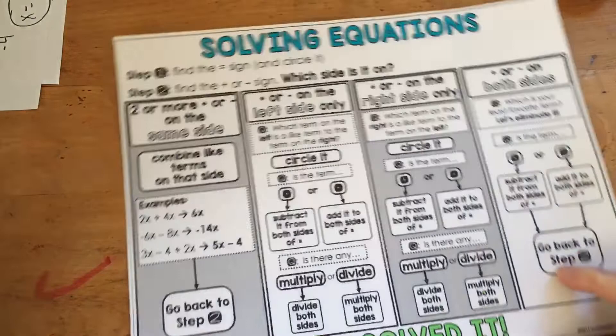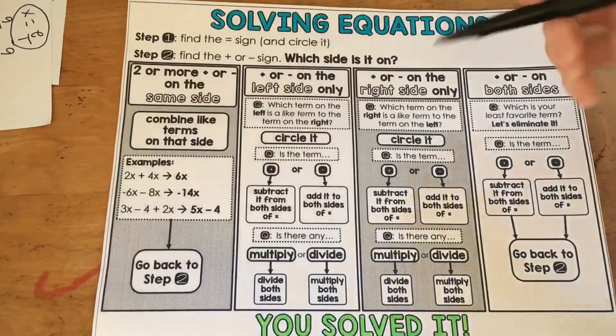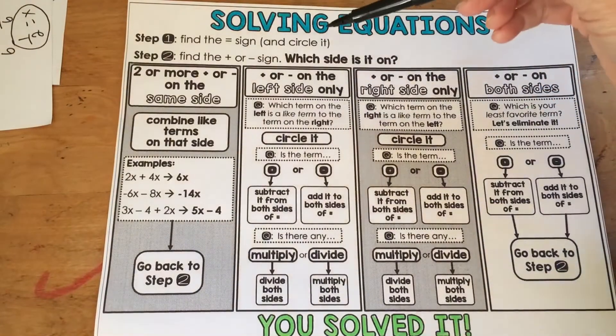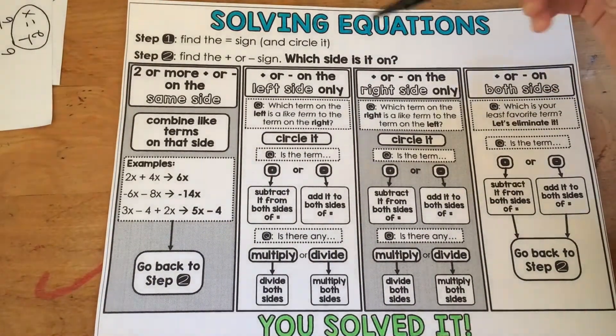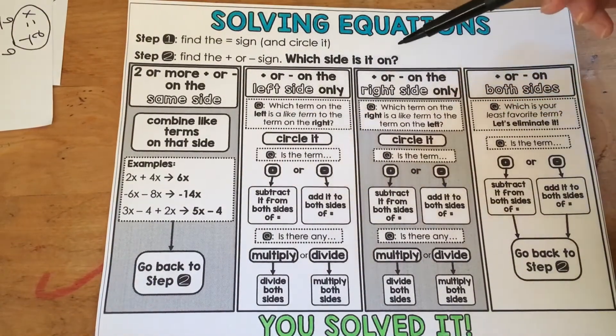On my blog is this free solving equations graphic organizer. It lays out all of it. You start up here, find the equal sign, circle it. They don't have to circle it, that's just an idea. Find the positive or negative sign. Which side is it on?